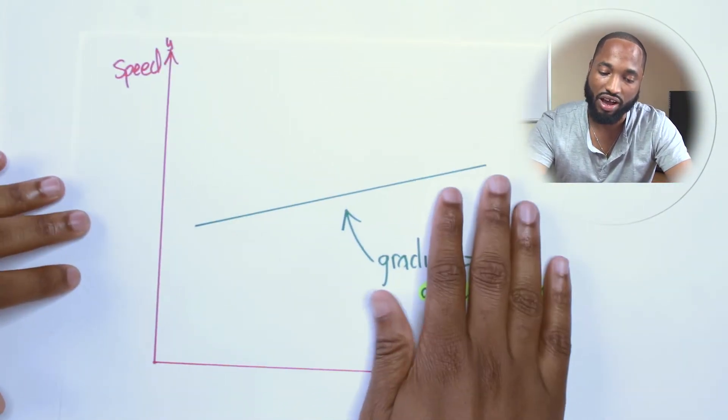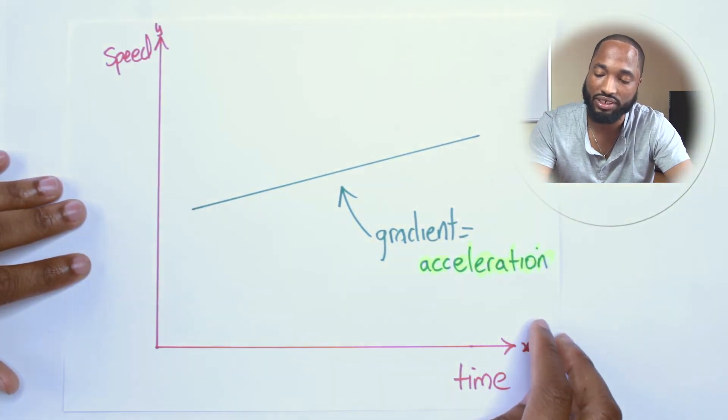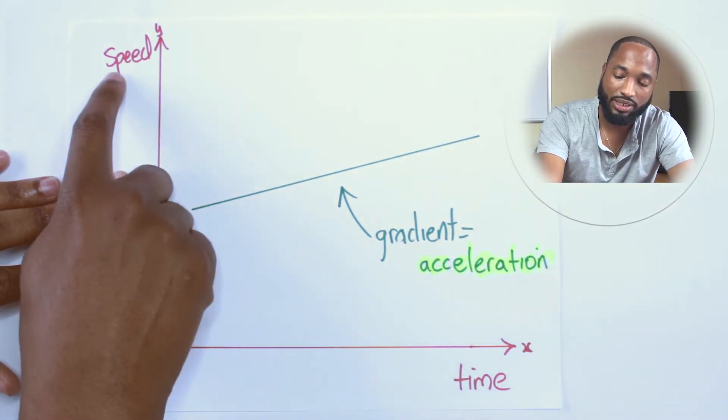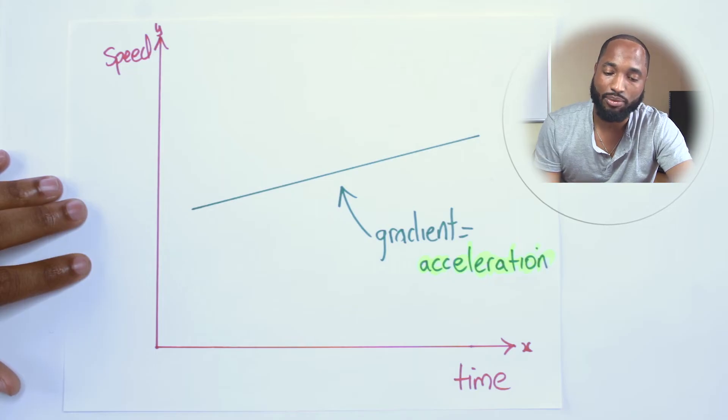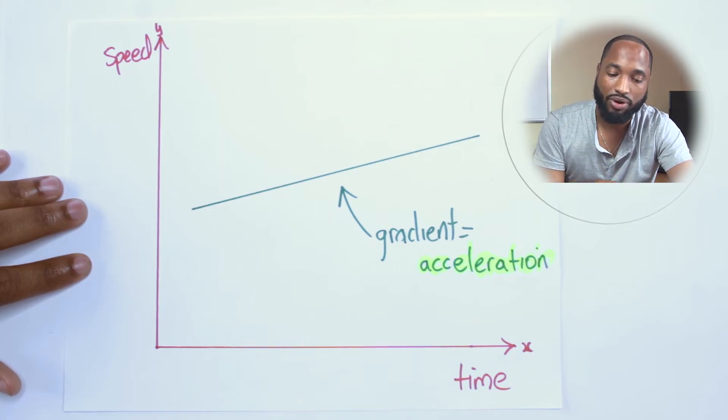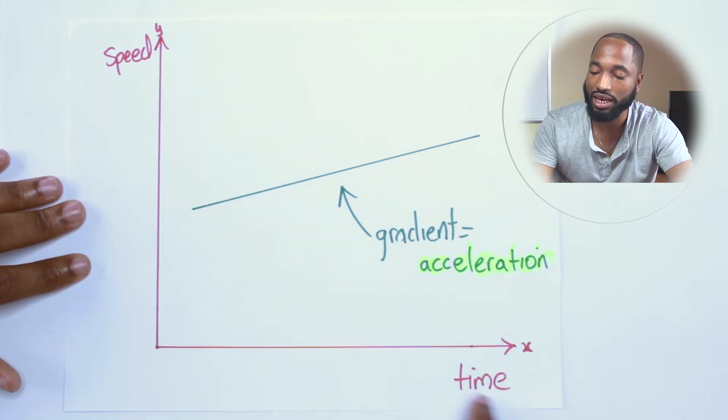There's a next thing you need to know: there are two types of graphs in this field of mathematics for CXC—speed-time graphs and distance-time graphs. We're not doing distance-time graphs now, I just want you to look at a speed-time graph.